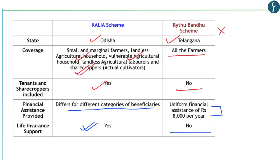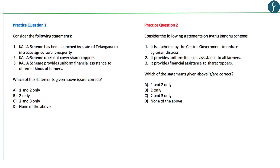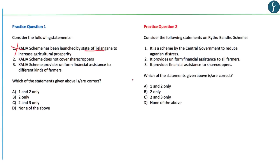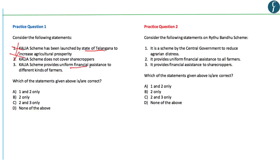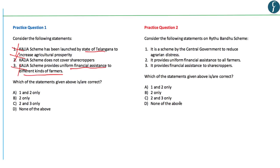This comparison becomes extremely important from your prelims perspective for the upcoming 2019 examination. Now these form your practice questions for the day. Question 1: Consider the following statements. First, KALIA scheme has been launched by the state of Telangana — this is incorrect, as KALIA was launched by the state government of Odisha. Second, KALIA scheme does not cover sharecroppers — this is incorrect, as KALIA does cover sharecroppers. Third, KALIA scheme provides uniform financial assistance to different kinds of farmers — this is again incorrect, as KALIA provides different financial assistance to different categories. Hence, all statements are incorrect and D is the correct answer.